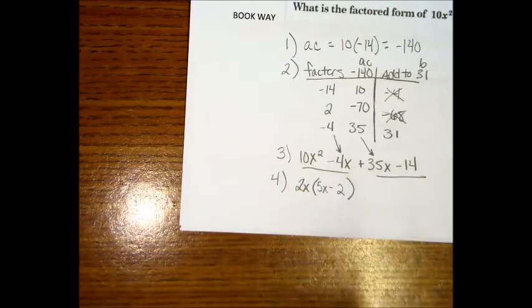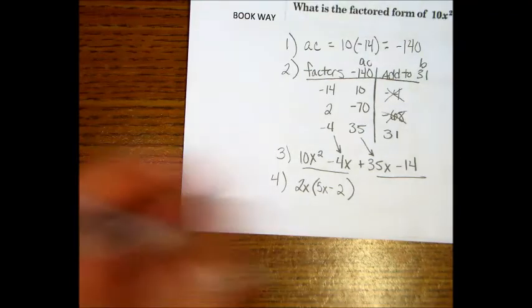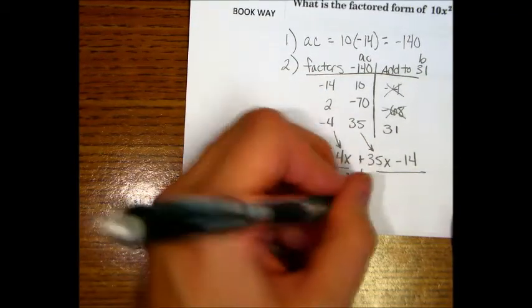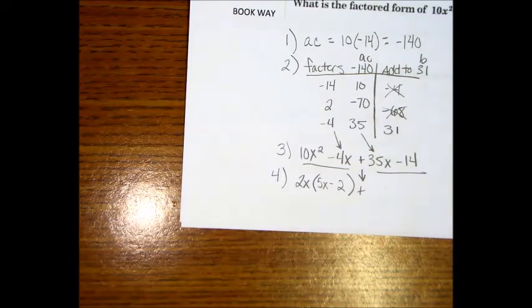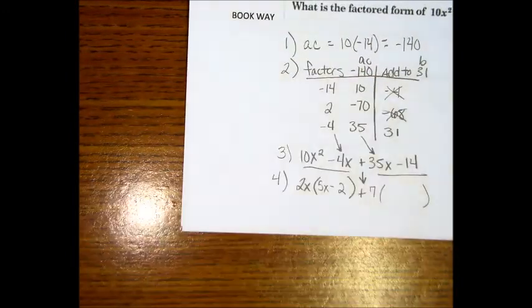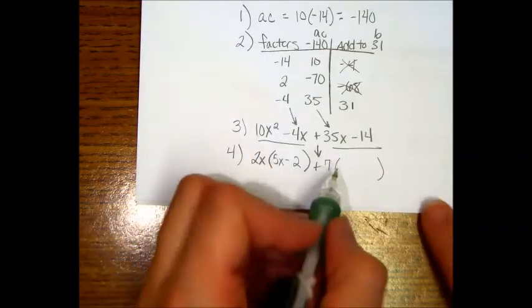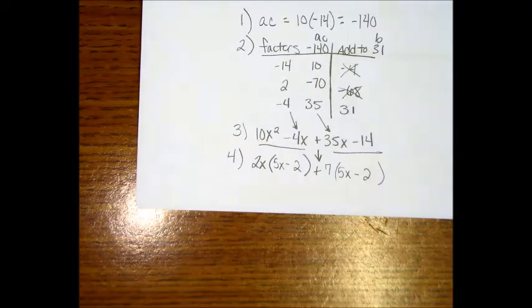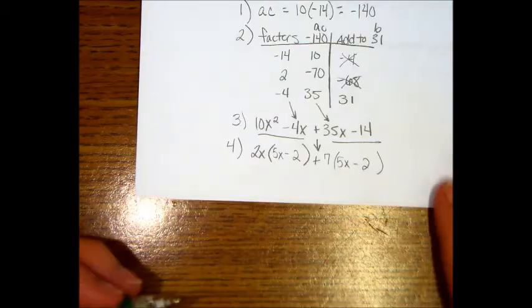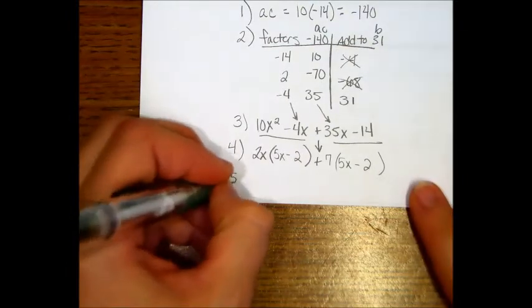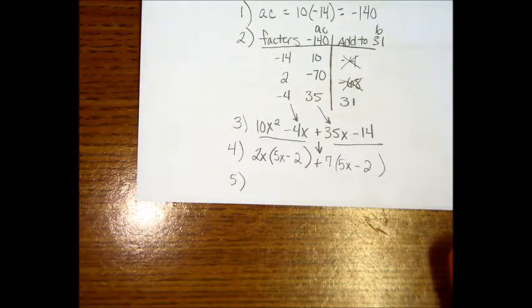Now, we'll group the second two. What goes into 35 and 14? 7. And just FYI, you guys see that arrow I just drew? That's always what sign you want to factor out. So, in this one, we're factoring out a positive 7. And what would we end up with? Times 5x minus 2. And you should know that the parentheses are, what do you notice about the parentheses? They're the same. And if that doesn't happen, guess what? It's wrong.